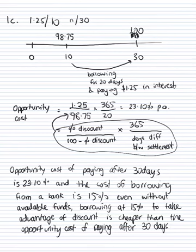So in summary, if we pay after 30 days, that's like us borrowing $98.75 on day 10, paying $1.25 in interest to pay $100 after 30 days. That is like borrowing at an interest rate of 23.1 percent. So even if we don't have any money available, we're better off borrowing money from a bank at 15 percent so that we can get the discount, because that 15 percent is much lower as an interest rate than the cost of paying after 30 days.